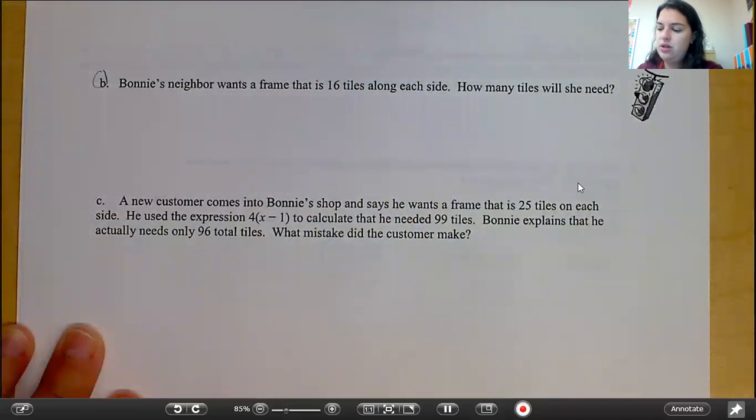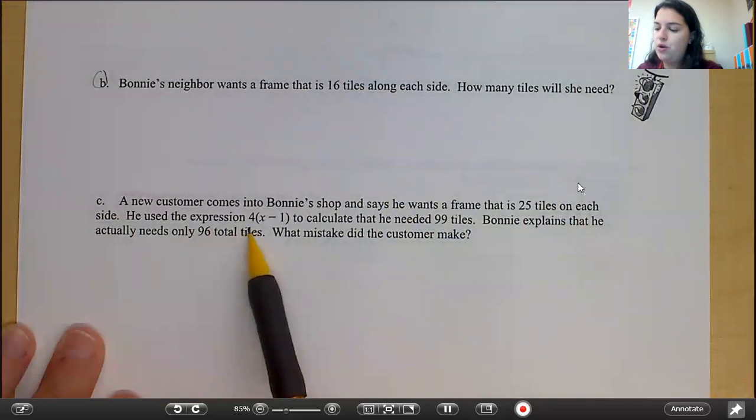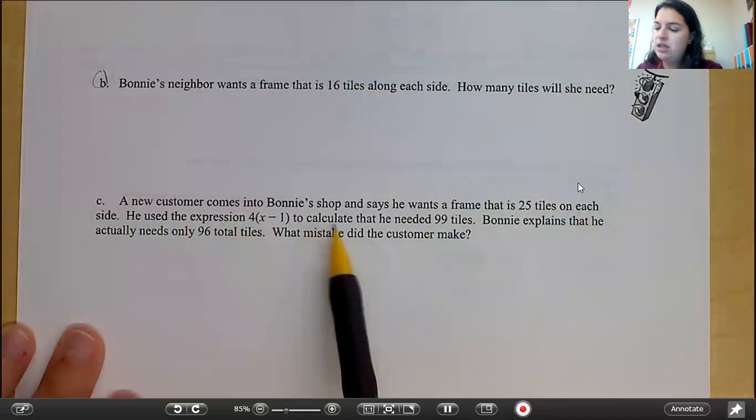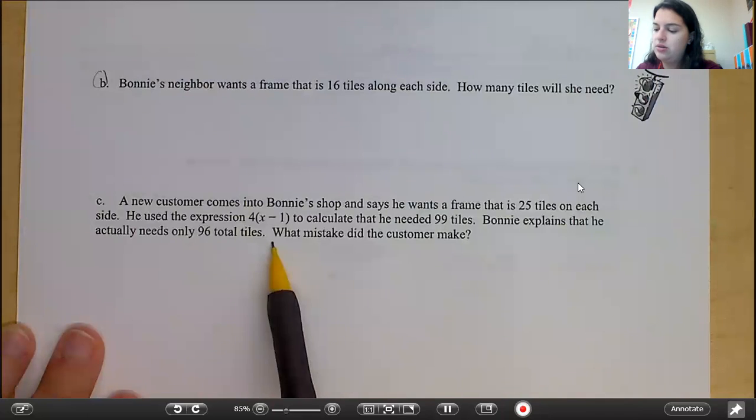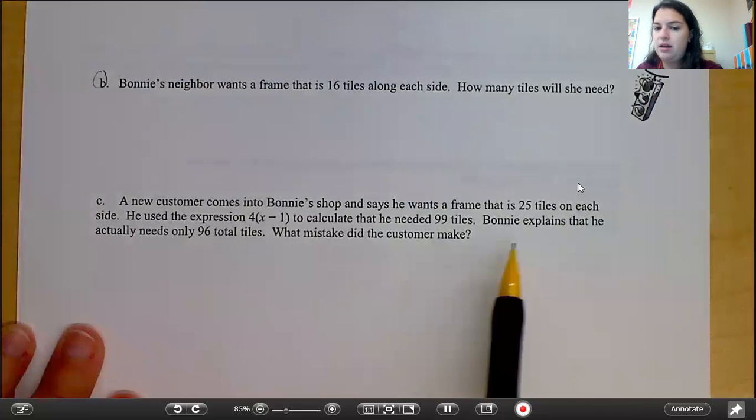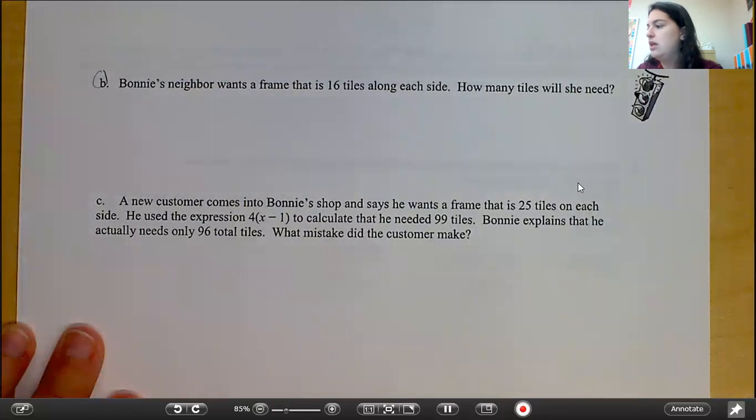Part C says, A new customer comes into Bonnie's shop and says he wants a frame that has 25 tiles on each side. He used the expression 4 times the quantity of X minus 1 to calculate that he needed 99 tiles. Bonnie explains that he actually only needs 96 tiles. What mistake did the customer make? So go ahead and answer part C.